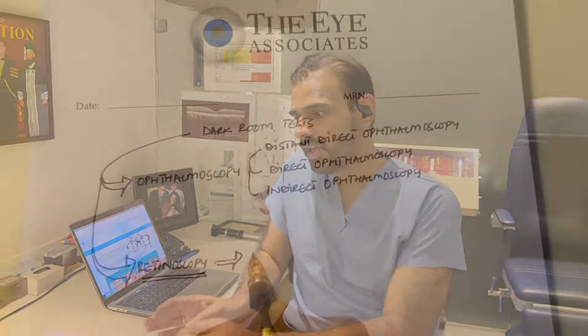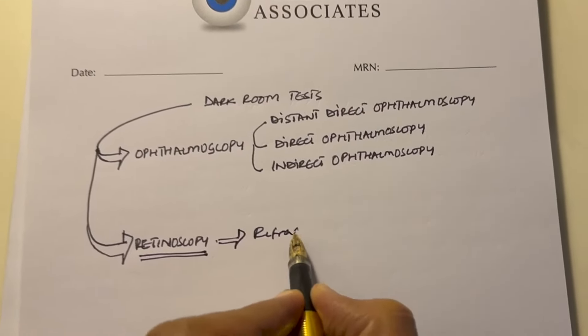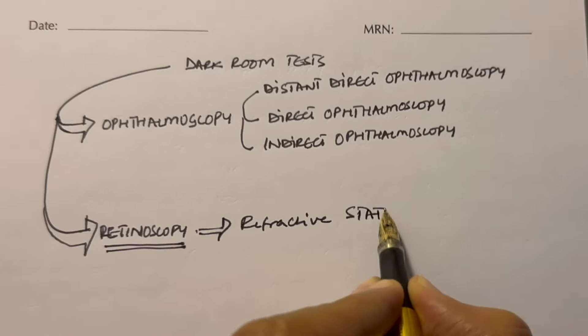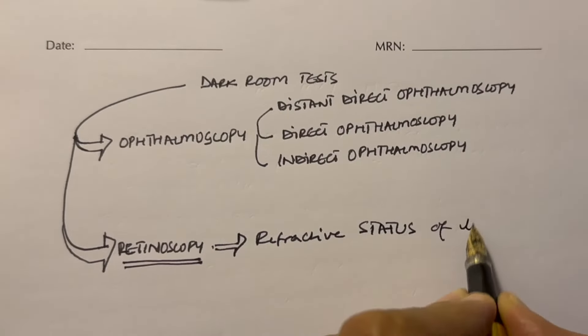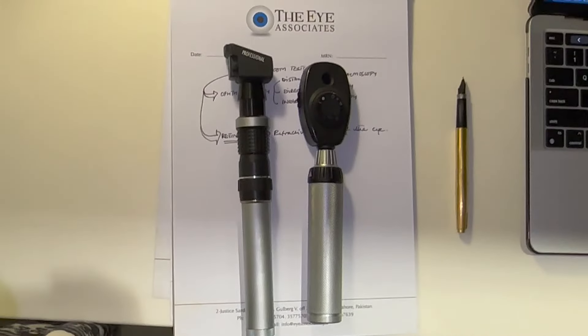Hi, this is Aliyaz and you're watching Ophthalmology with Mas. Today we'll be doing the retinoscopic component of the darkroom test. Retinoscopy is done to look at the refractive status of the eye.